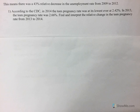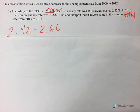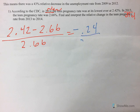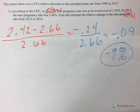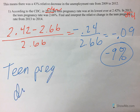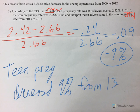Let's do an example. According to the CDC, in 2014 the teen pregnancy rate was at its lowest ever at 2.42%. In 2013 the teen pregnancy rate was 2.66%. Find and interpret the relative change. So 2013 is old and 2014 is new — new minus old divided by old — giving us negative 0.24 over 2.66, which is roughly negative 0.09, or roughly negative 9%.